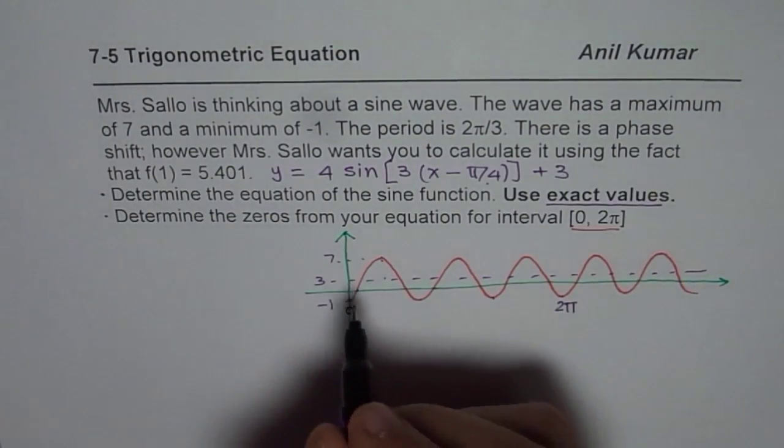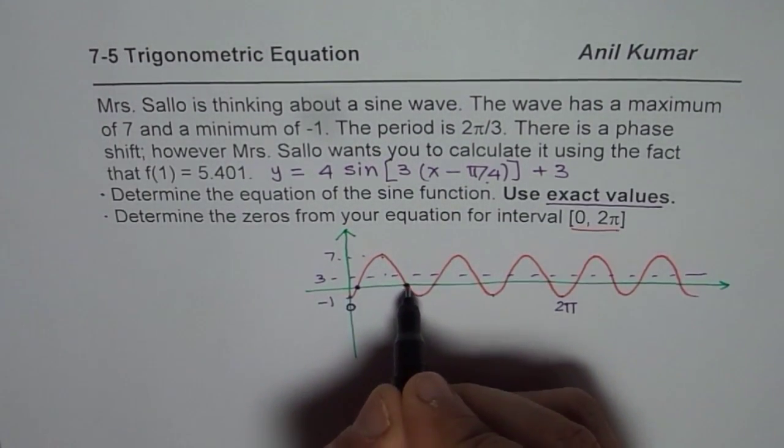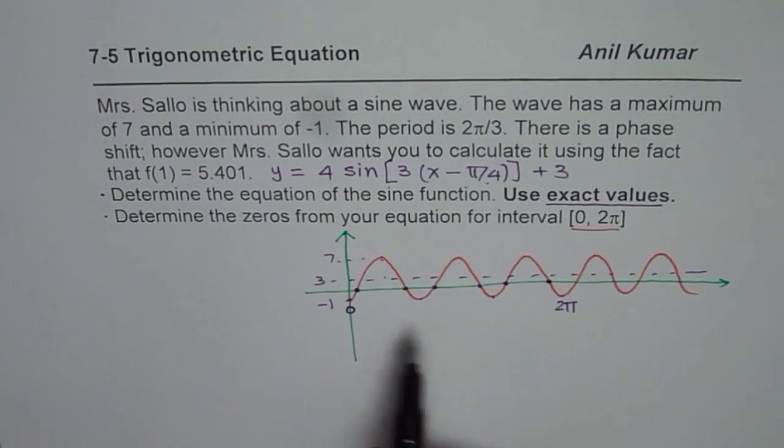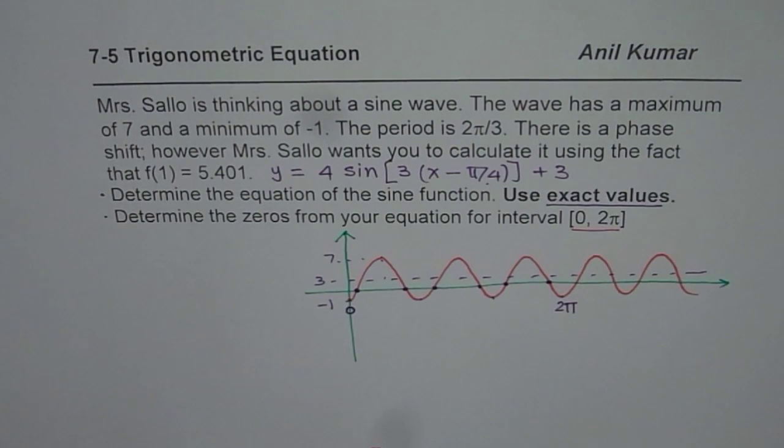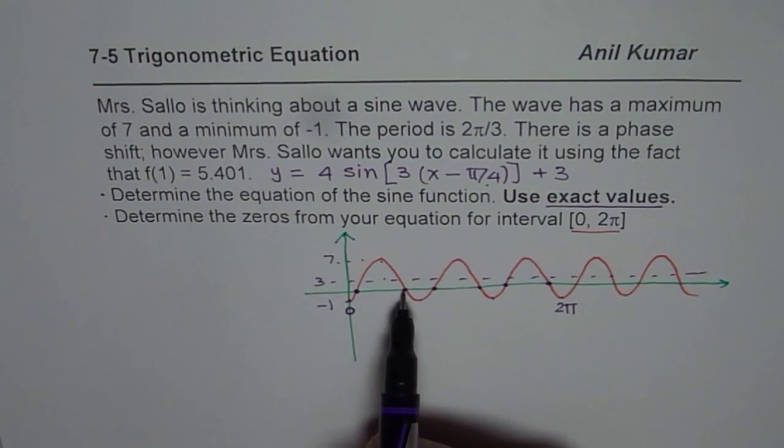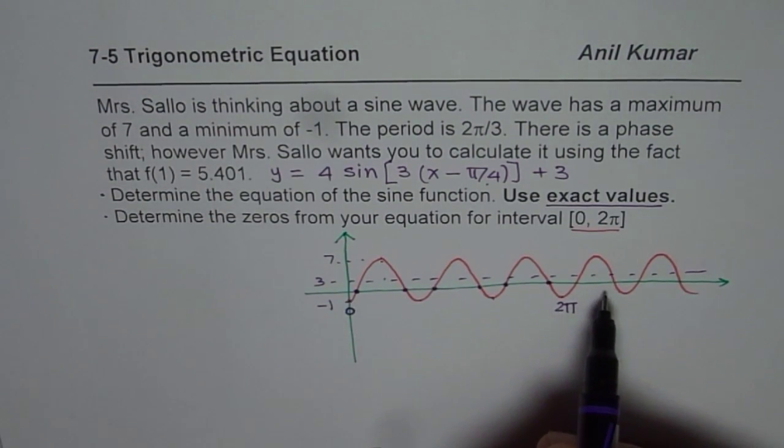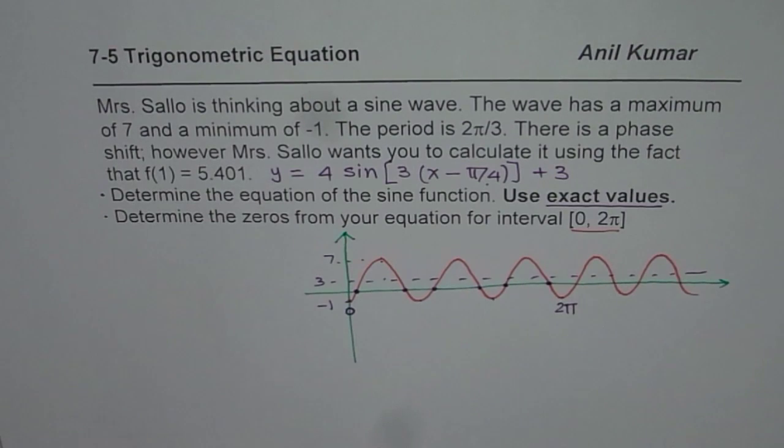As far as zeros are concerned you can see we have zeros 1, 2, 3, 4, 5, and 6. So you should expect 6 zeros as your answer. So what you need to do is you need to find at least 2 zeros and then you can add the time period to get the rest. That is the approach.